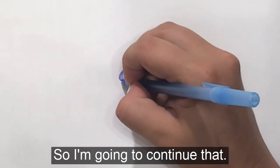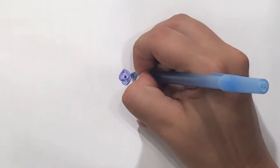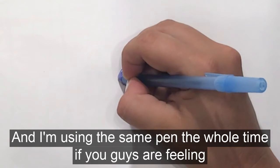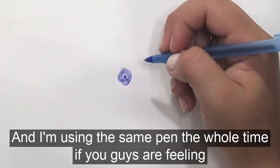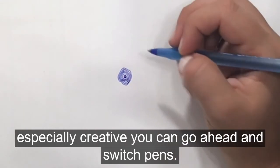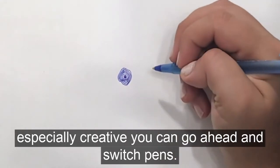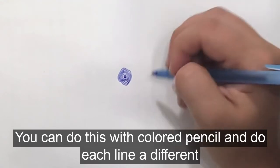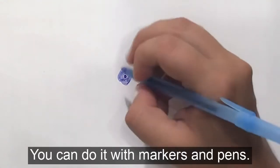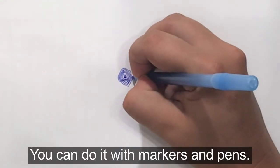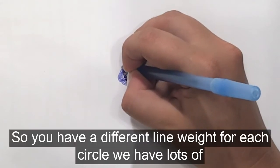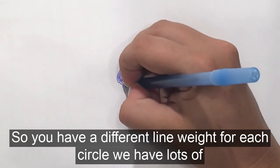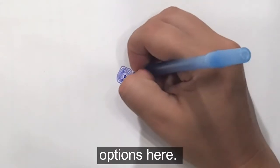So I'm going to continue that, and I'm using the same pen the whole time. If you guys are feeling especially creative, you can switch pens. You can do this with colored pencil and do each line a different color. You can do it with markers and pens so you have a different line weight for each circle. You have lots of options here.